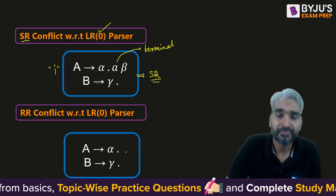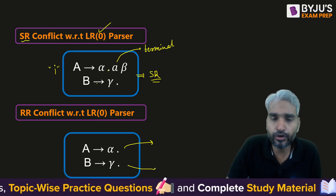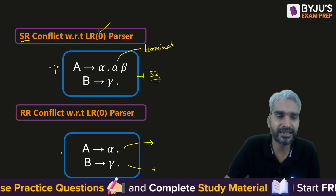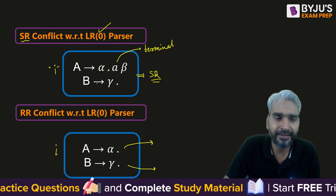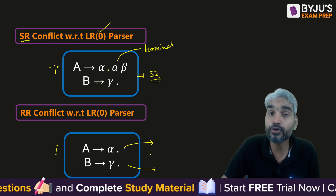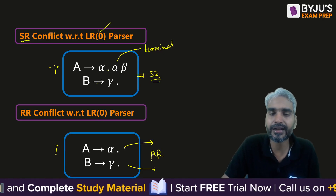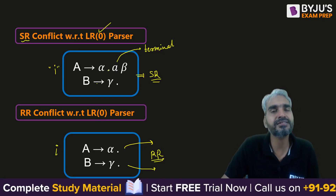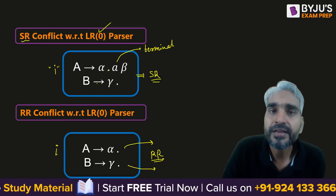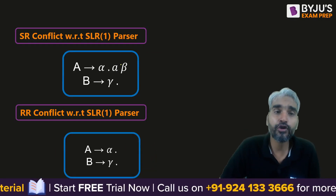This is because LR0 blindly places the reduce entries in the parsing table. Similarly, if there are two reduce productions in state i of the DFA of LR0 items, then we can directly say that RR conflict exists in that state.